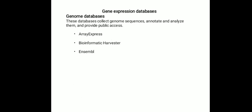Examples include ArrayExpress, which is an archive of functional genomics data that stores data from high-throughput functional genomics experiments from EMBL. Ensembl provides automatic annotation databases for human, mouse, other vertebrate and eukaryote genomes. Ensembl Genomes provides genome-scale data for bacteria, protists, fungi, plants and invertebrate metazoa through a unified set of interactive and programmatic interfaces using the Ensembl software platform.